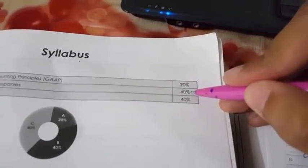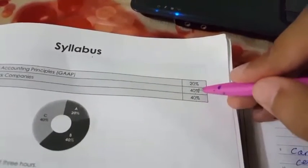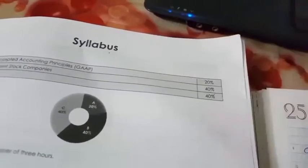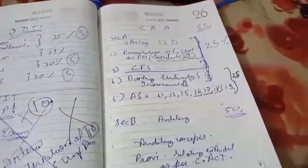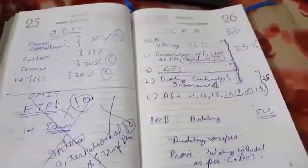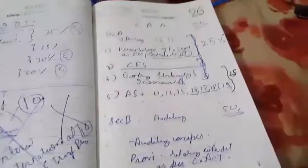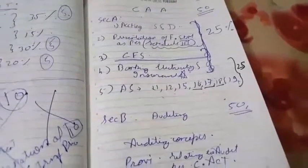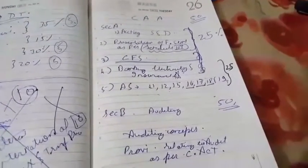Section B is auditing for 50 marks, covering auditing concepts and provisions relating to audit as per the Companies Act. Earlier it was 40 marks for accounts of joint stock company and 40 marks for audit, but now it is 50 marks each. I hope I have made the syllabus 2016 clear for Intermediate Group 2. Please like, share, and subscribe. Thank you.